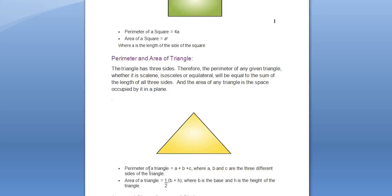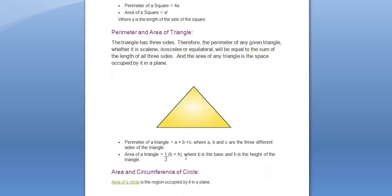The area of the triangle is given by half into base into height. This is the base and this will be the height. The perimeter is given by A plus B plus C, where A, B and C are the 3 different sides of the triangle.